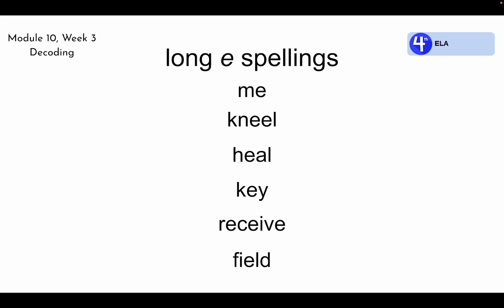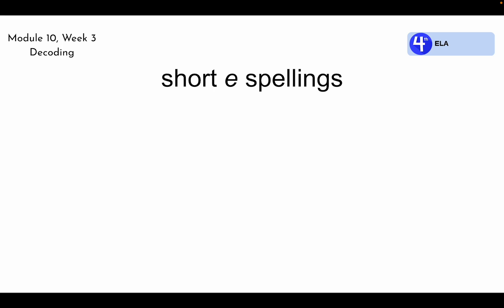Now let's look at words spelled with the short e sound. Short e is usually spelled with one e, as in the words bet, bed, well, seven, nest.